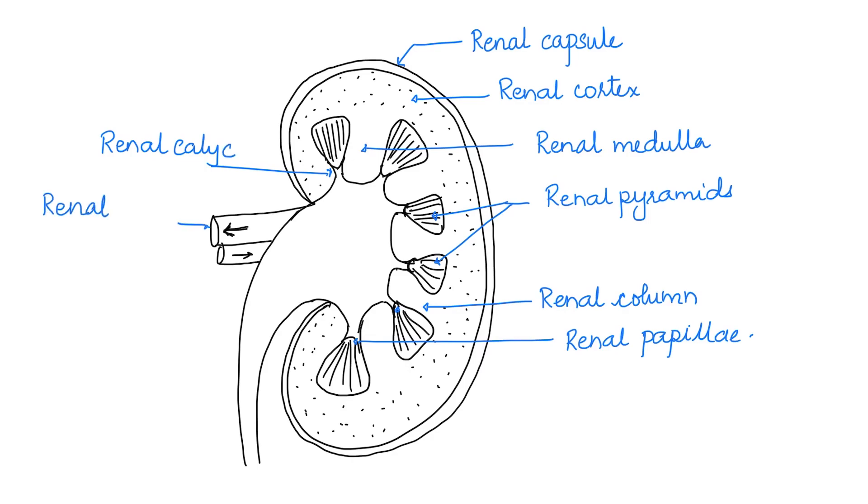The blood vessel with the arrow away from the kidney is the renal vein and the one with the arrow towards the kidney is the renal artery. The funnel-shaped part inside is the renal pelvis which extends out of the kidney to form the ureter.